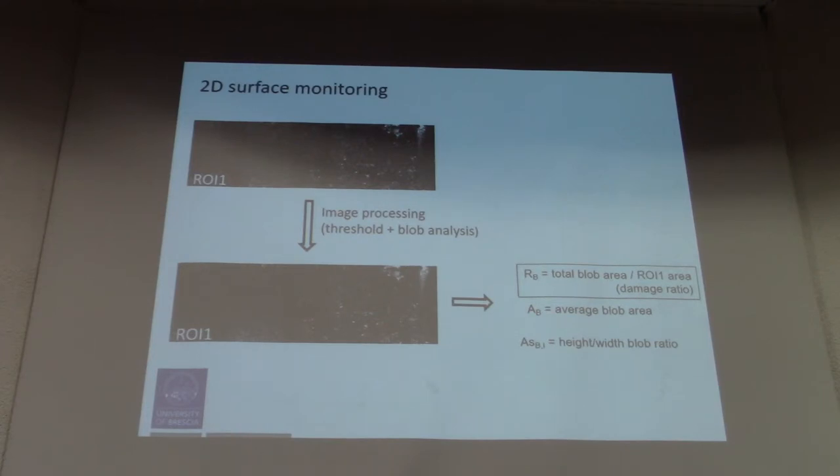Then we calculate some synthetic indexes. In particular, we calculate the damage ratio, which is the index called Rb, which is the ratio between the total blob area—the total area of the bright particles—and the whole region of interest area. And this is what we do for image processing.